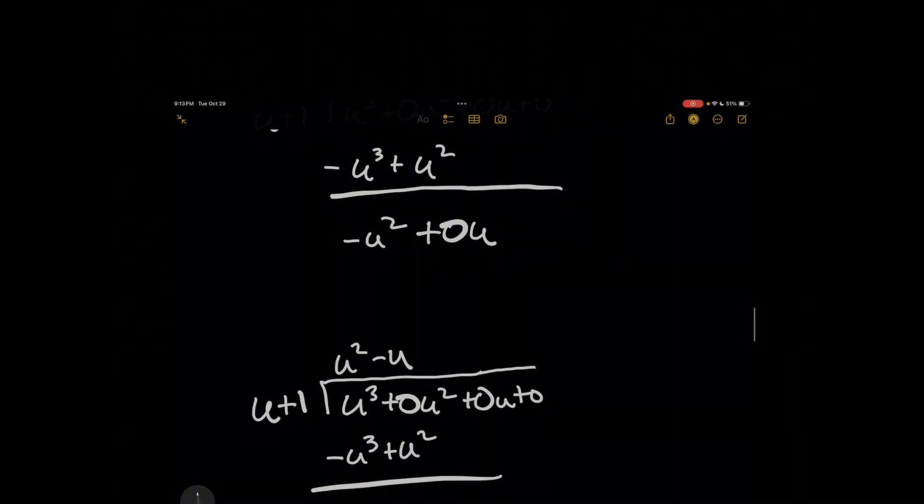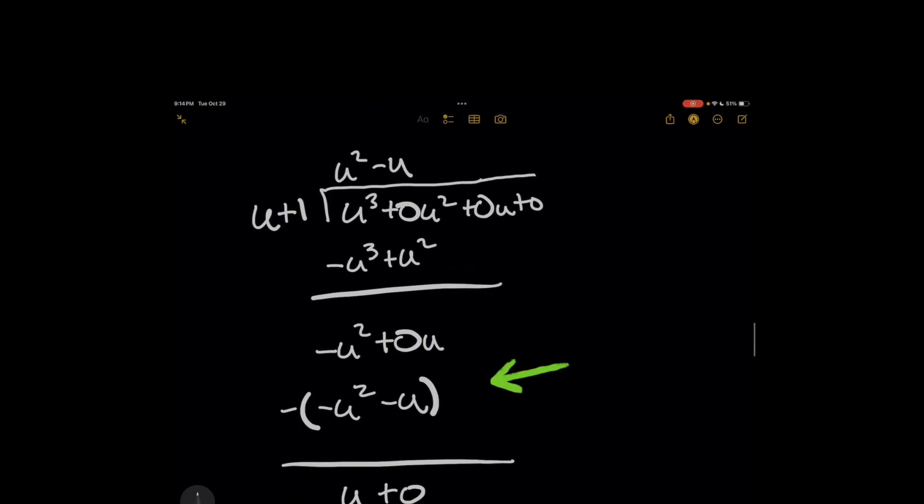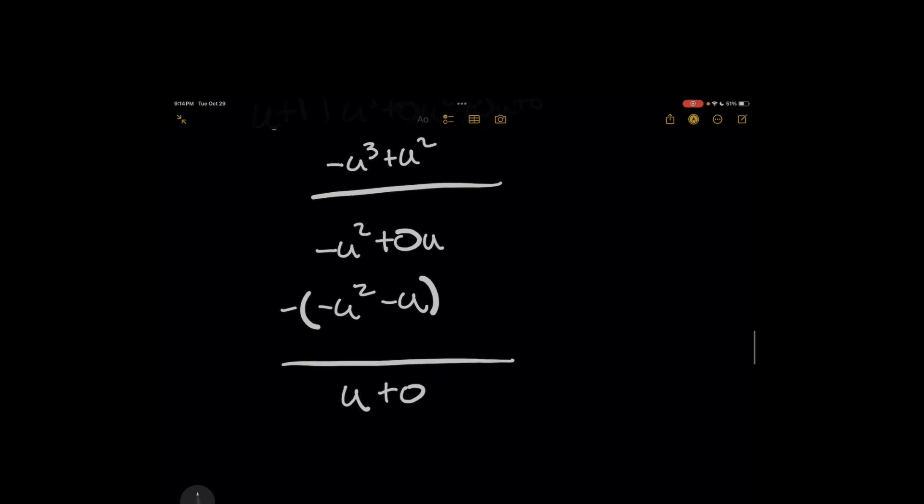So I'm going to write that as the next term in my quotient above. And once again, now negative u is going to be multiplied by every term on the left. I'm going to put it in parentheses because I'm dealing with the negative here. That's going to give you negative u squared minus u. And we're going to once again subtract everything, giving you a u as a result.